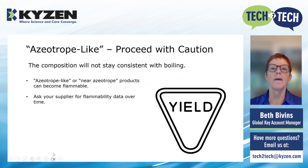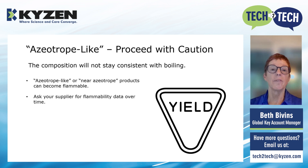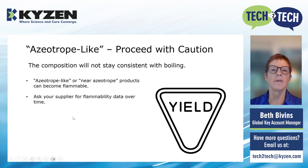If you are looking at alternatives to discontinued products or need to replace a solvent for another reason, be aware that many products are advertised as 'azeotrope-like.' I would say proceed with caution, because the composition of these doesn't stay the same. Products labeled as 'azeotrope-like' or 'near azeotrope' can become flammable or cleaning performance can degrade. If a product is labeled this way, ask your supplier for flammability data over time — specifically, whether they've monitored the flashpoint as the solvent boils or evaporates.